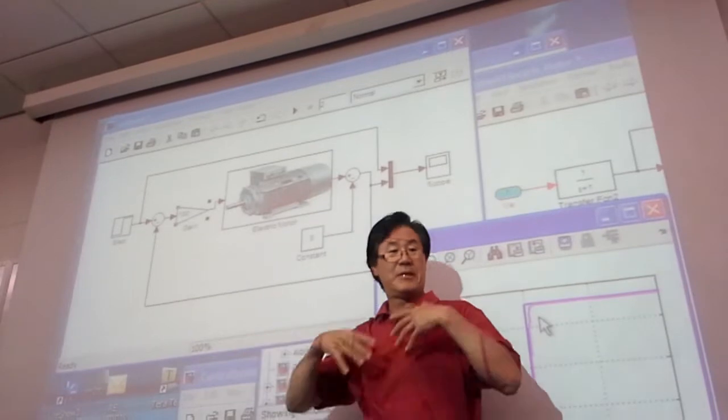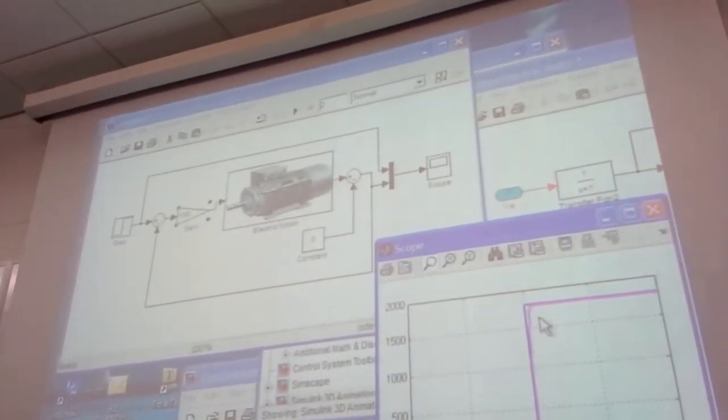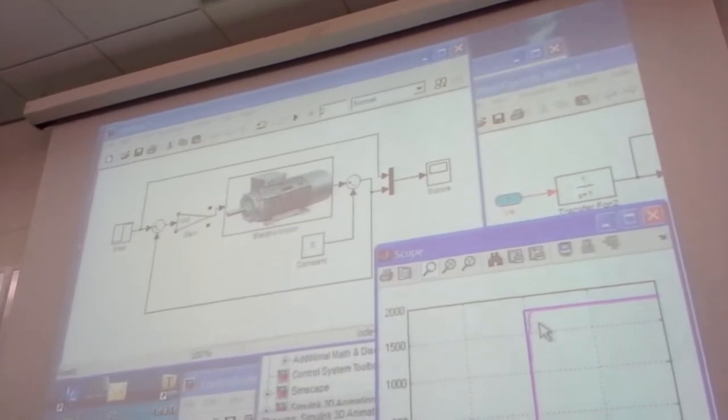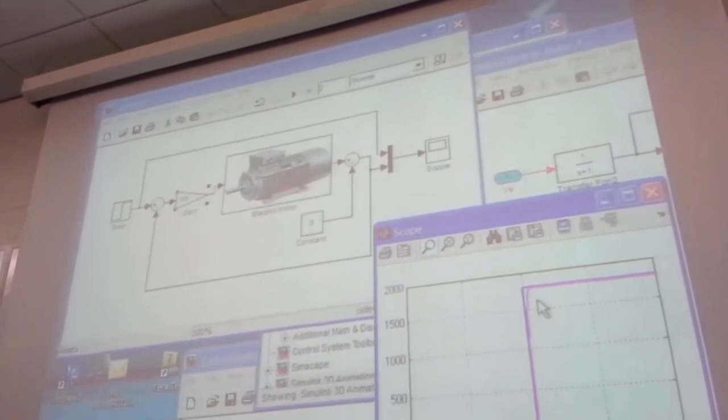That is the closed loop system. This is the simplest control. Just gain. And there is some more here. The simplest you can do. But this is theoretically you can do. Practically you cannot do this. So, okay. Now let's go to the next one.